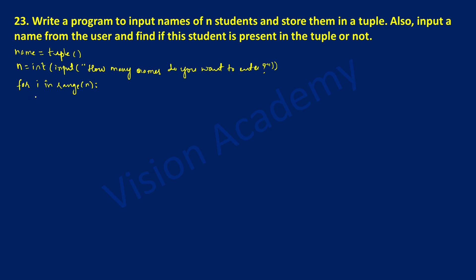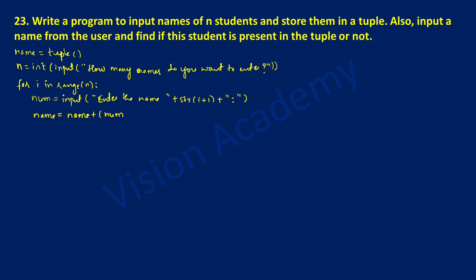With indentation, I'm going to write a variable called num is equal to input, and inside the round bracket I'll allow the user to enter the name. I'll use the concatenation operator with the str function and i plus one. So for the first time i value is zero, zero plus one will become one. It is going to print 'enter the name 1', and then a colon. Whatever we enter will be stored in num and it goes on adding to name.